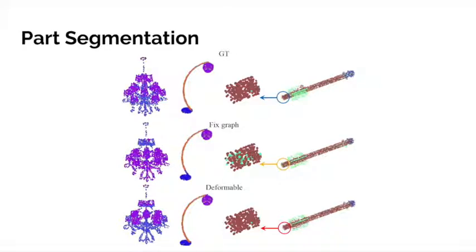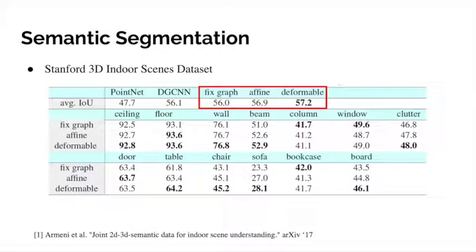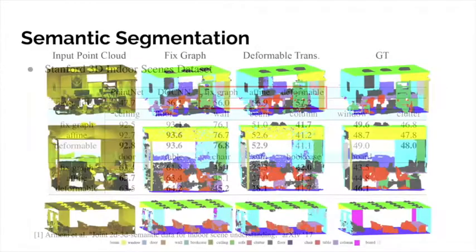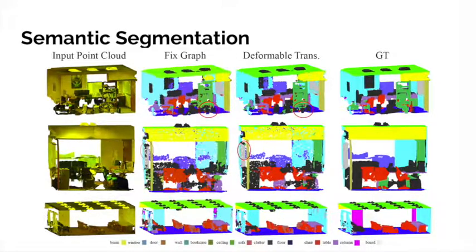The second task is semantic segmentation on the large-scale Stanford 3D indoor scenes dataset. Again, we show performance improvement with spatial transformers. Our spatial transformers also outperform state-of-the-art methods. Visualization of the segmentation results suggests that combining a network with transformers will give better results.